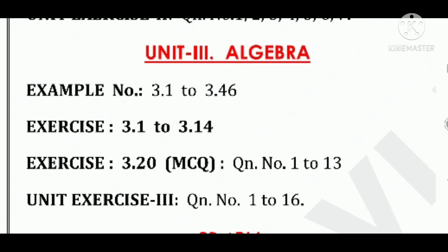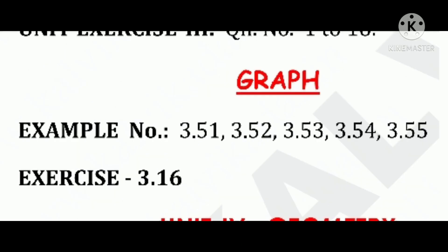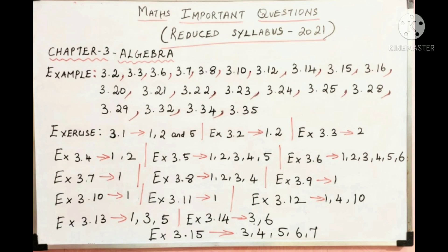Third chapter algebra. Example sums 3.1 to 3.46 is included. Exercise 3.1 to 3.14 and exercise 3.20 is one word, question number 1 to 13. Unit exercise question number 1 to 16 include. And that is the graph. Example sum 3.1, 5.1, 5.2, 5.3, 5.4 and 5.5. This is the graph. Exercise 3.16 will be full.